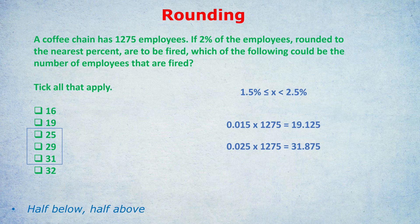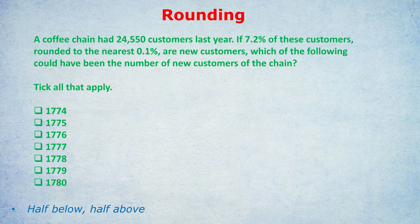The next example is going to test you on a harder rounding question. A coffee chain has 24,550 customers last year. If 7.2% of these customers, rounded to the nearest 0.1%, are new customers, which of the following could have been the number of new customers of the chain? Tick all that apply.